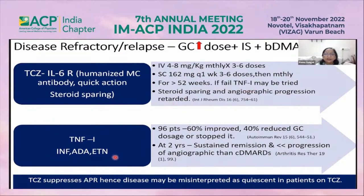TNF inhibitors include infliximab, adalimumab, and etanercept. Both tocilizumab and TNF inhibitors have shown a steroid-sparing effect, and angiographic progression is retarded by both agents.